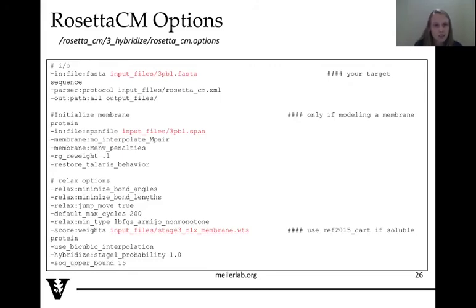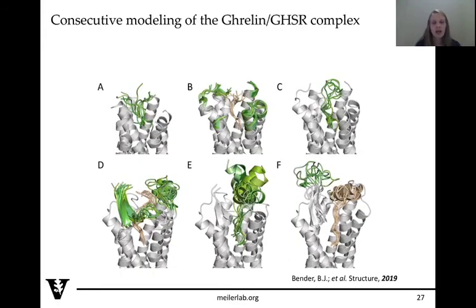Here's a list of your Rosetta CM options. You supply the FASTA file, point to your XML script, and include different options for relax. What I've talked you through is a very traditional way of using Rosetta CM — you have a sequence, you get the templates, and you produce a model. But I encourage you to think of ways you could use Rosetta CM to answer other types of questions or look at your modeling from a different perspective.